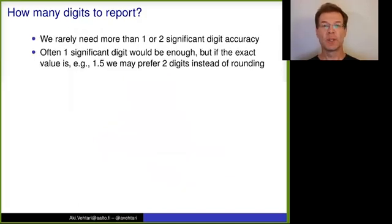So we rarely need more than one or two significant digit accuracy. Often this one significant digit would be enough. But if the exact value is something like 1.5, we may prefer 2 digits instead of rounding it to 1 or 2. But then 2 digits might be more than is actually needed. But it's somewhere there, 1 to 2 digits.